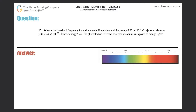Number 15: What is the threshold frequency for sodium metal if a photon with frequency 6.66 times 10 to the 14th cycles per second ejects an electron with 7.74 times 10 to the negative 20th joules of kinetic energy? And will the photoelectric effect be observed if sodium is exposed to orange light? It's a two-part question.